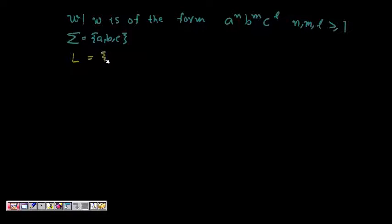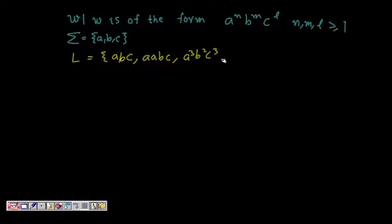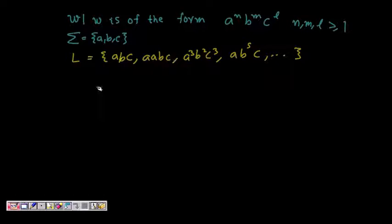So it will be something like a, a, b, c — this is accepted since all exponents are at least 1. For example, a³b²c³ is fine. Or a, b⁵, c is also fine. So it's an infinite language.